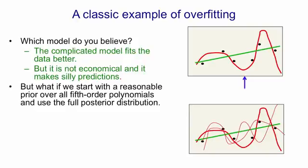But everything changes if instead of fitting one fifth order polynomial we start with a reasonable prior over fifth order polynomials for example that their coefficient shouldn't be too big and then we compute the full posterior distribution over fifth order polynomials. I've shown you some samples from this distribution in the picture where a thicker line means higher probability in the posterior.